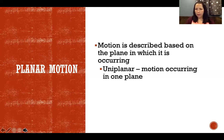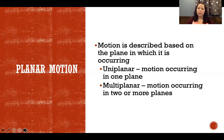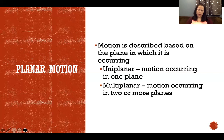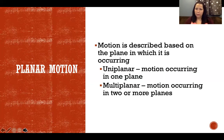If you're moving in only one plane, that's uniplanar motion — for example, moving strictly in the sagittal plane. But more often we're moving in more than one plane simultaneously, which we call multiplanar. Walking forward is primarily sagittal, but each individual joint may have some rotation or frontal or horizontal plane movement happening as well, even if the majority of movement is along the sagittal plane.